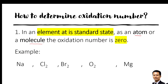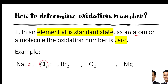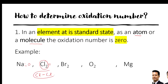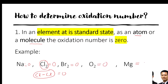Next, how to determine the oxidation number. For an element at its standard state — as an atom or molecule — the oxidation number is 0. For example, Na is 0. Cl₂ is 0 — Cl bonded with Cl, so all of these are 0. The same for Br₂, O₂, and Mg — all 0. So these are elements at standard state, sometimes called free elements.